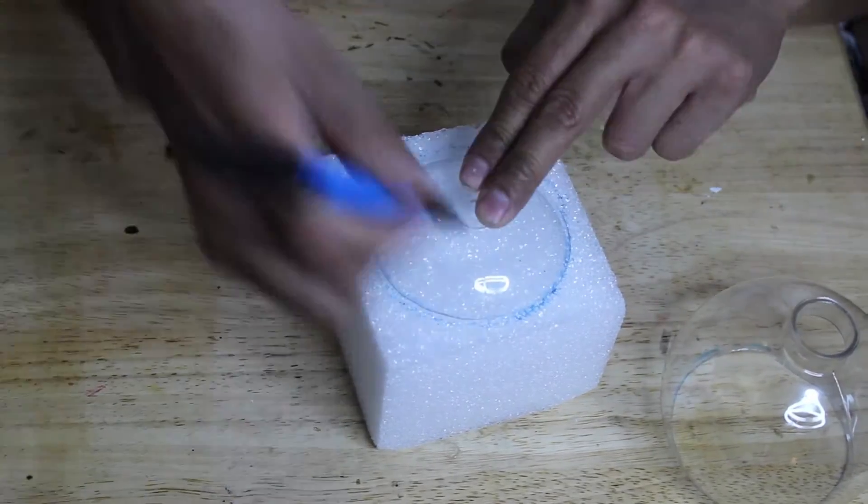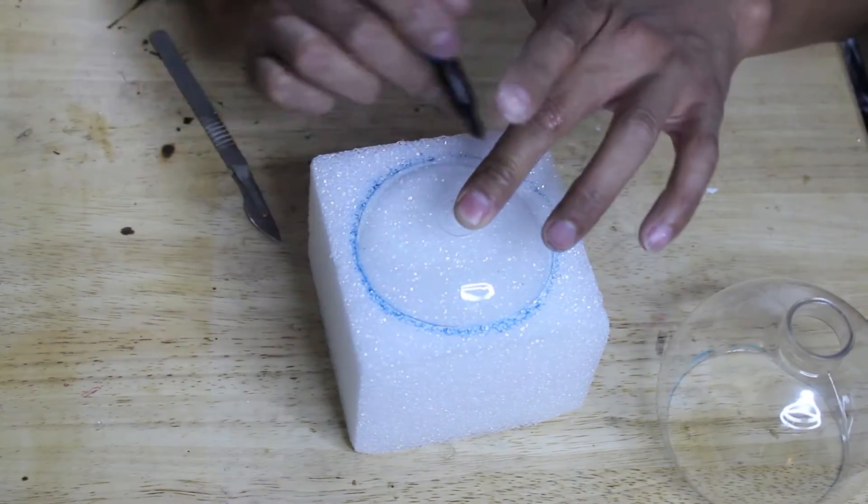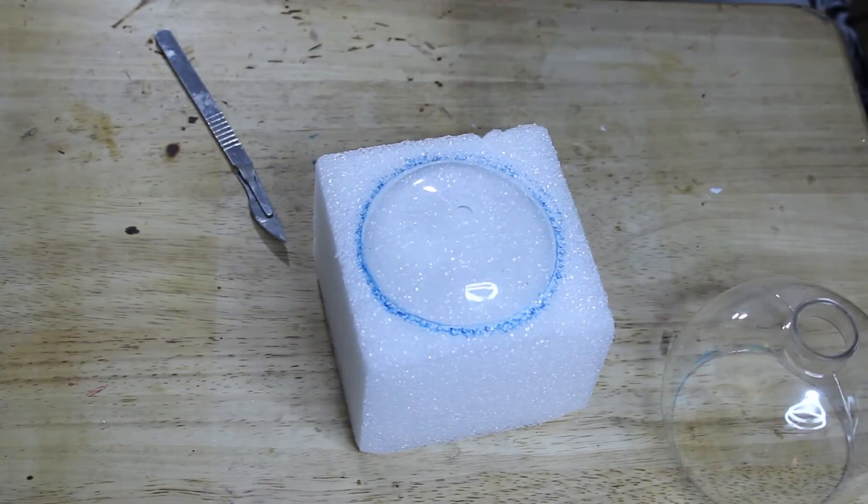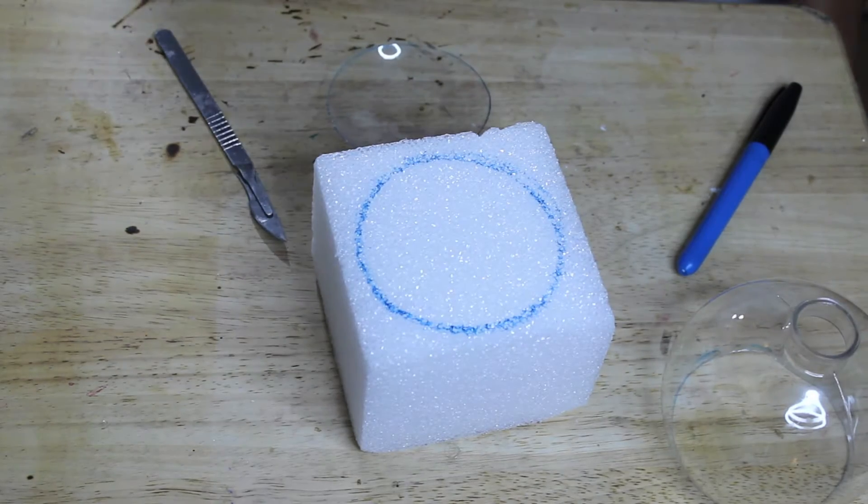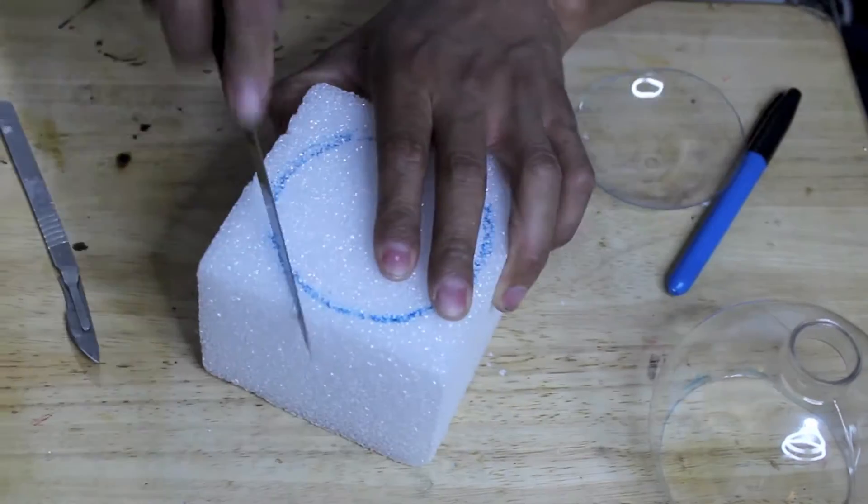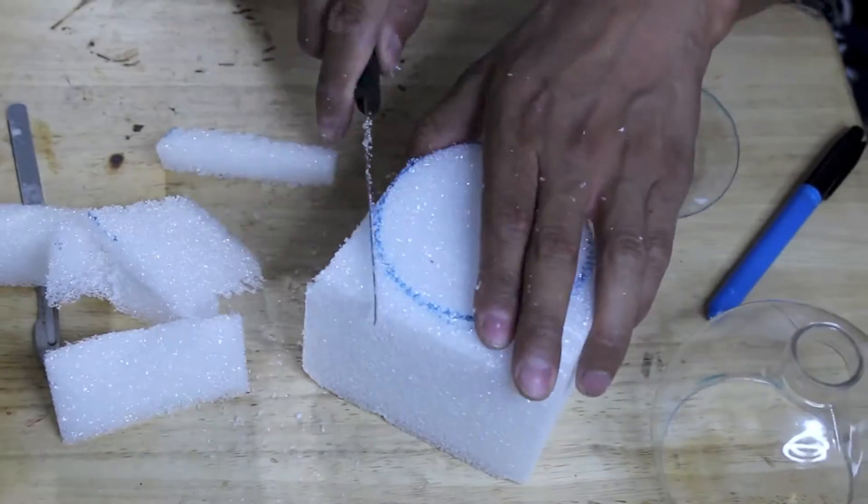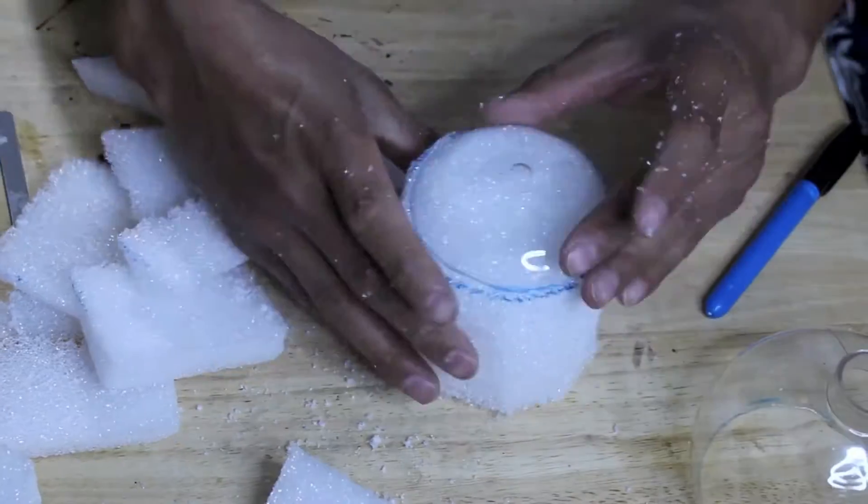Because we didn't have a styrofoam ball, we had to get a little bit crafty, so we took the bottom half of the ornament, used that to trace around the styrofoam ball, and then with a knife, we cut everything out and shaped it. Obviously, be careful when using a knife. You definitely don't want to cut yourself, hurt yourself, or hurt other people around you. So just be aware of that.